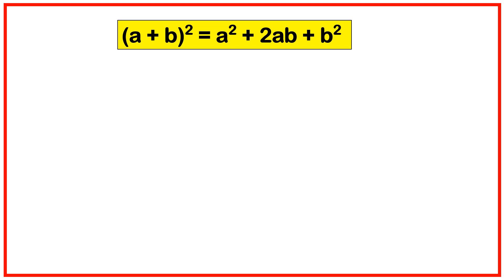We are going to prove geometrically that (a + b) whole square is equal to a square plus 2ab plus b square. The length of this line segment is a, and another line is b. If you add these two, you will get a plus b. Construct a square with this side.